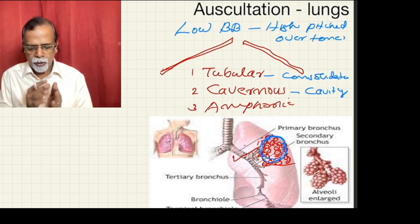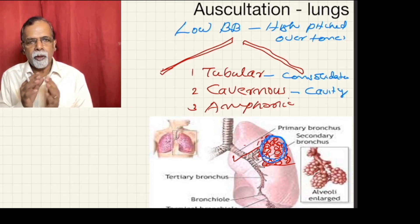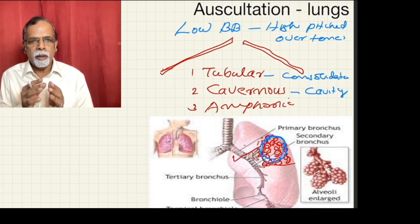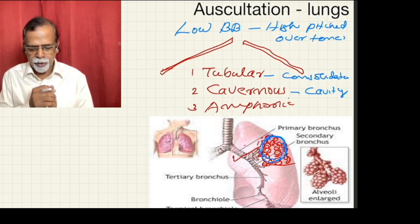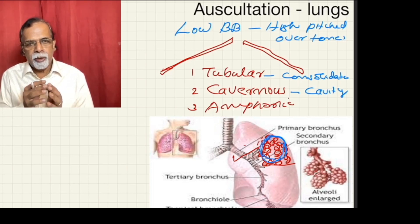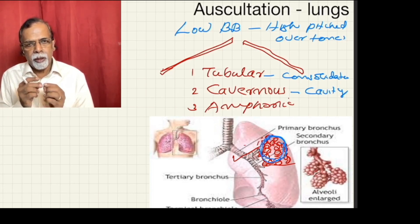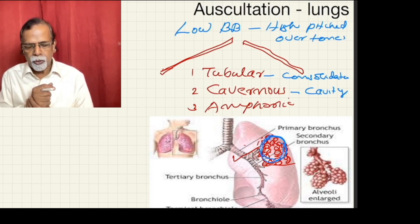So basically there is a tubular breath sound which is high-pitched, heard over consolidation where the lung is damaged but the bronchus is patent — as in a case of collapse of lung or large pleural effusion where the lung is collapsed but the bronchus is patent. Cavernous is heard over a cavity, and amphoric can occur in a large communicating cavity or sometimes a pneumothorax which is communicating, otherwise called bronchopleural fistula.